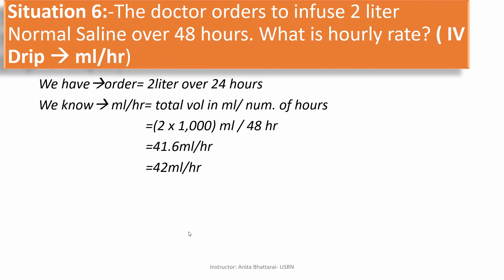Let's see the next situation — situation 6. The doctor orders to infuse 2 liters of normal saline over 48 hours. What is the hourly rate? To calculate ml per hour, the formula is total volume in ml divided by number of hours. The total volume is 2 liters — converting to ml using the metric table (1 liter = 1000 ml) gives 2000 ml. Dividing 2000 by 48 hours equals 41.6 ml per hour.